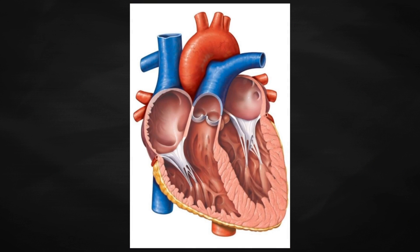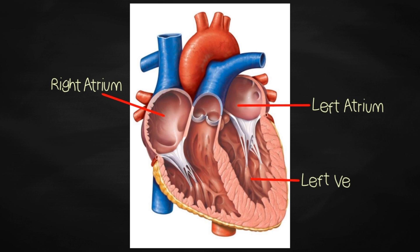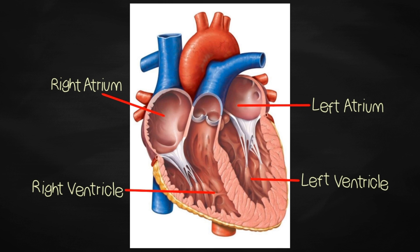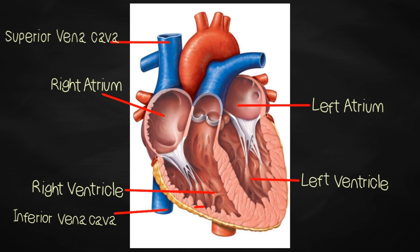Our heart has four main chambers: the right and left atrium and the left and right ventricles. The right side of the heart has the right atrium that receives deoxygenated blood from the body through the superior and inferior vena cava. The superior and inferior vena cava deliver deoxygenated, or oxygen-poor, blood from the body to the heart. We have here the tricuspid valve that separates the right atrium and right ventricle and prevents backflow of deoxygenated blood from the right ventricle.